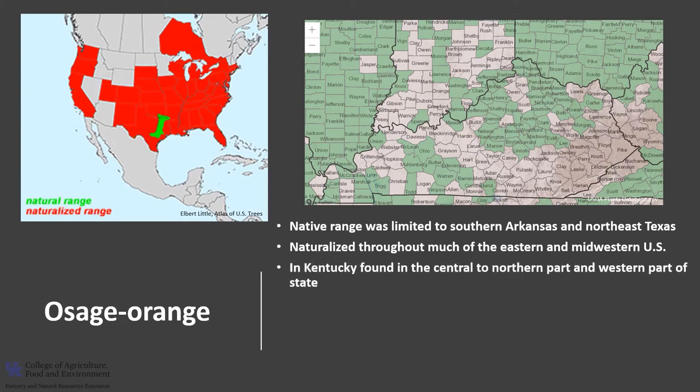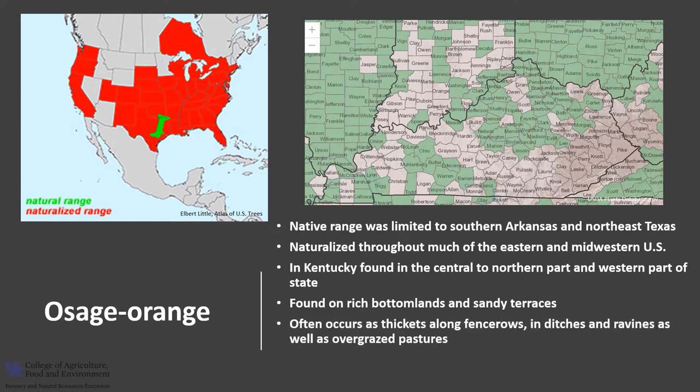In Kentucky it is found in the central to northern central part of the state into western Kentucky. The native and naturalized populations are found on rich bottomlands and sandy terraces, and it often occurs in thickets along fence rows, ditches, ravines, and overgrazed pastures.